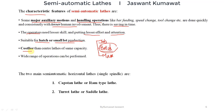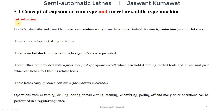Semi-automatic lathes are costlier compared to central lathes. If we compare a central lathe and a semi-automatic lathe of the same capacity, the cost of semi-automatic lathe is higher. In semi-automatic lathes we can perform a wider range of operations. Depending on construction, there are two main types of semi-automatic horizontal lathes — where the spindle is horizontal. We will study only single spindle lathes: the Capstan lathe, also known as RAM type lathe, and the Turret lathe, also known as Saddle type lathe.